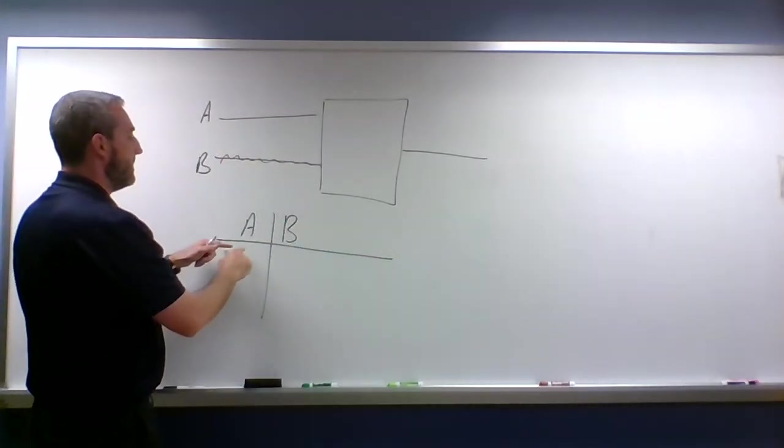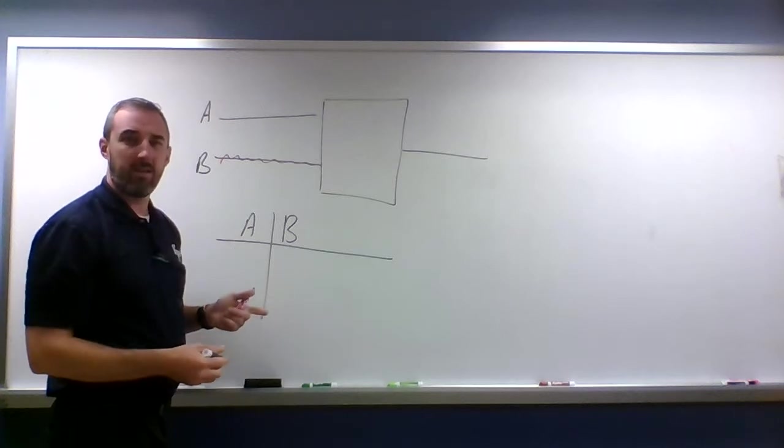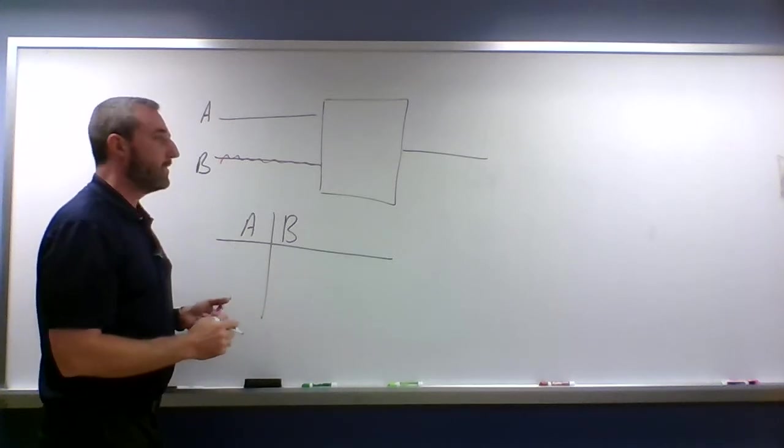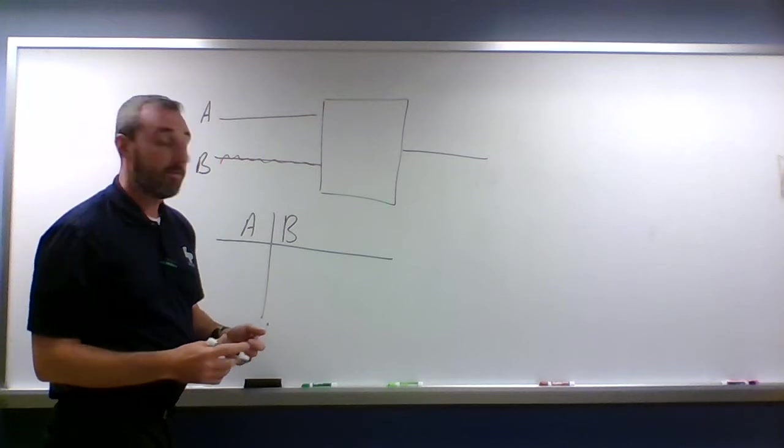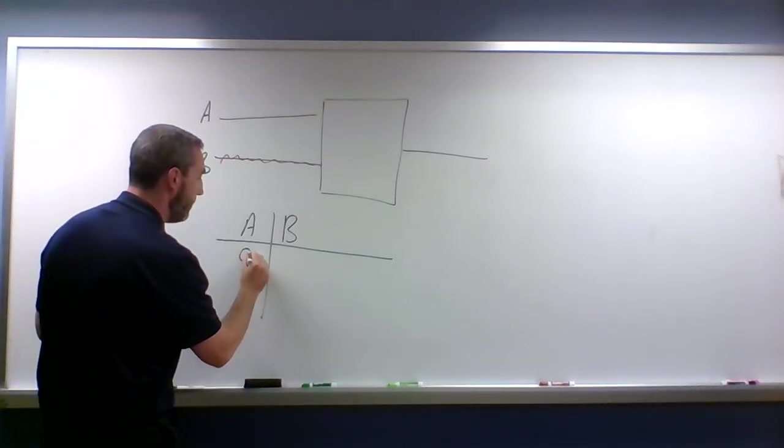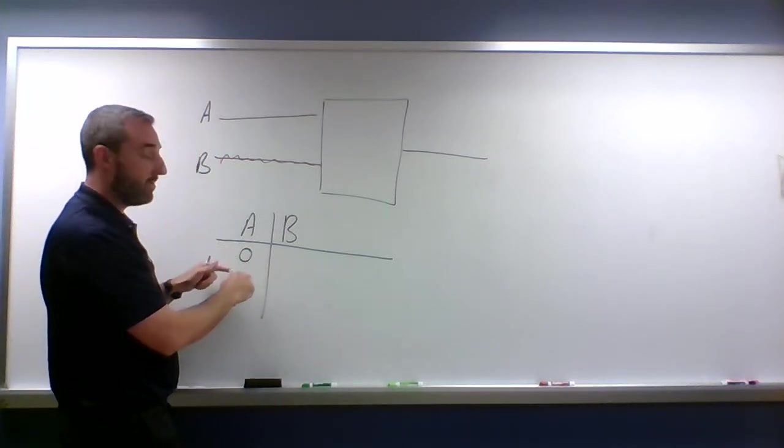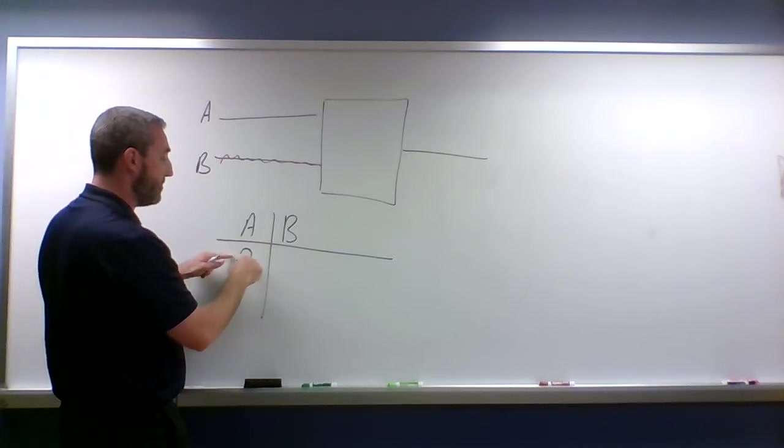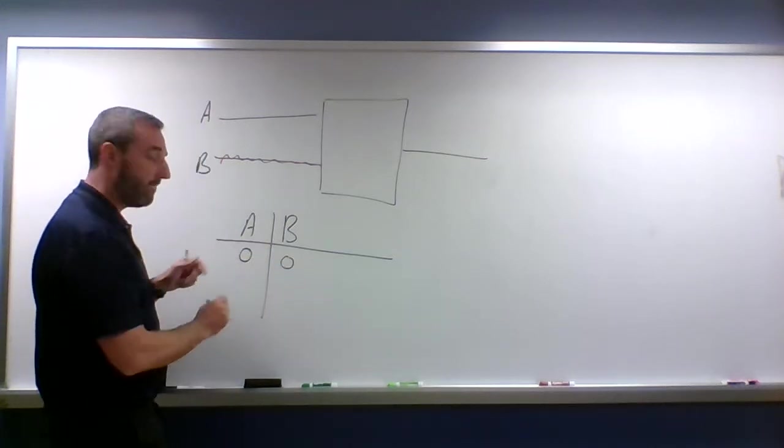Writing on and off is a little bit time consuming, so maybe we can just represent off with zeros. Anytime I have a zero, it means something's off. I can have one situation where A is off and B is off.